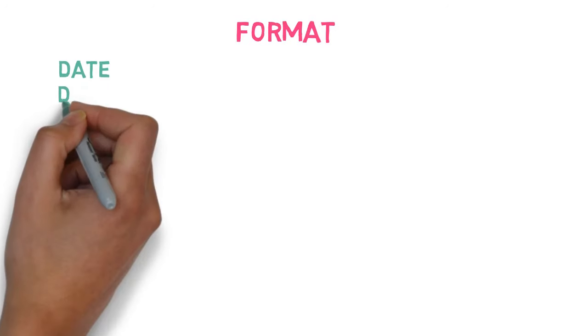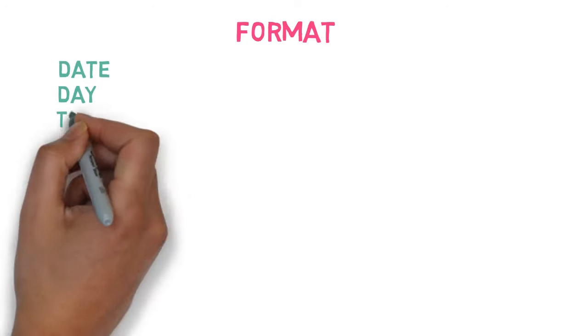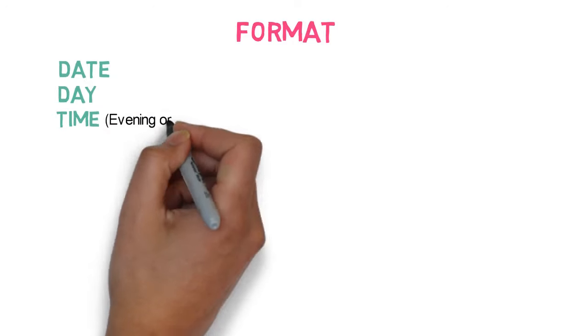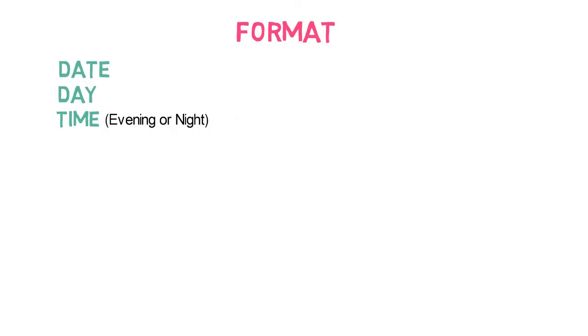First, in the left-hand corner, write the date on which you are writing the diary. Next, just below it, write the day. Next, just below it, write the time on which you are writing the diary. Generally, the time is post evening or night, as we are writing the diary after the day ends.